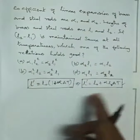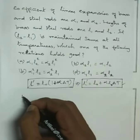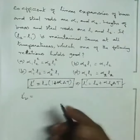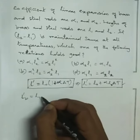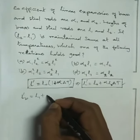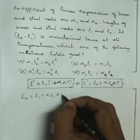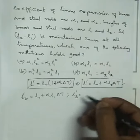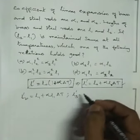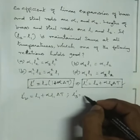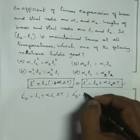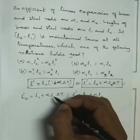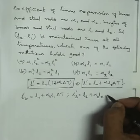Now we can substitute for steel and brass. L-brass equals L1 plus alpha1 L1 delta t. L-steel equals L2 plus alpha2 L2 delta t.